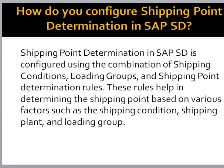How do you configure shipping point determination in SAP SD? Shipping point determination in SAP SD is configured using the combination of shipping conditions, loading groups, and shipping point determination rules. These rules help in determining the shipping point based on various factors such as the shipping condition, shipping plant, and loading group.